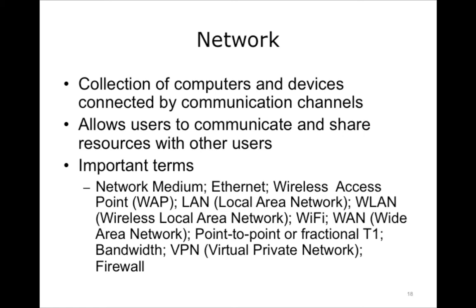Many access points may be needed to ensure connectivity to a network. Some additional terms to know include: LAN, or Local Area Network, which connects workstations and servers within a single demographic location; WLAN, or Wireless Local Area Network, the most common technology referred to as Wi-Fi; WAN, or Wide Area Network, which connects workstations across multiple locations, often great distances; point-to-point T1 and fractional T1, dedicated broadband lines that connect locations in a WAN; bandwidth, the rate of data transfer usually measured in bits per second; and VPN, or virtual private network, a way of securely accessing a specific network over the Internet.